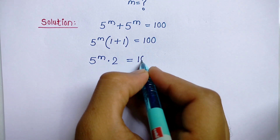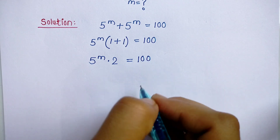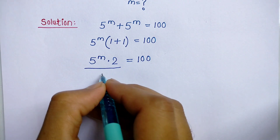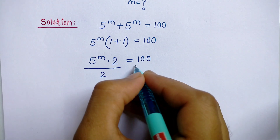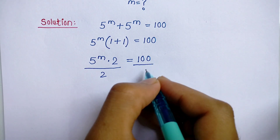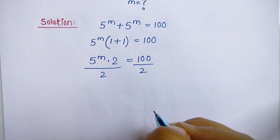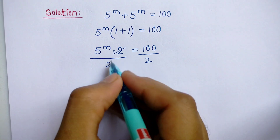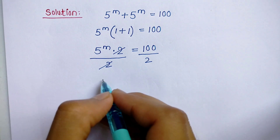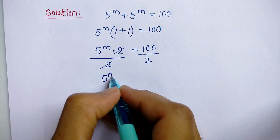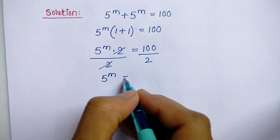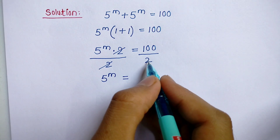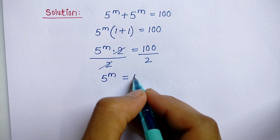Now 5 power m times 2 is equal to 100. We divide both sides by 2; the 2s cancel, and we get 5 power m is equal to 100 divided by 2, which is 50.